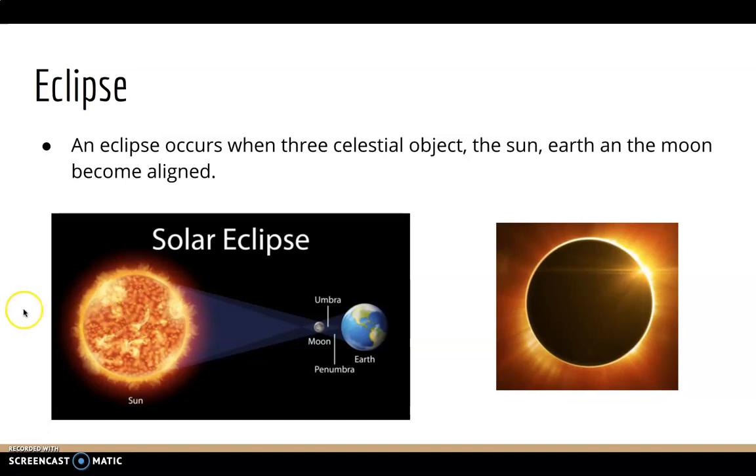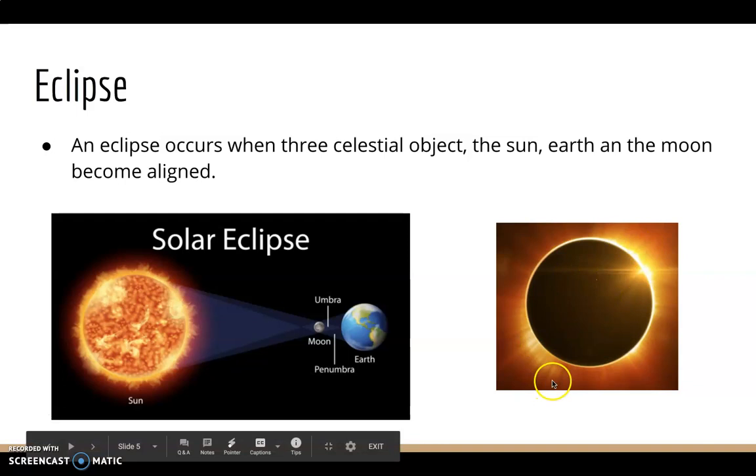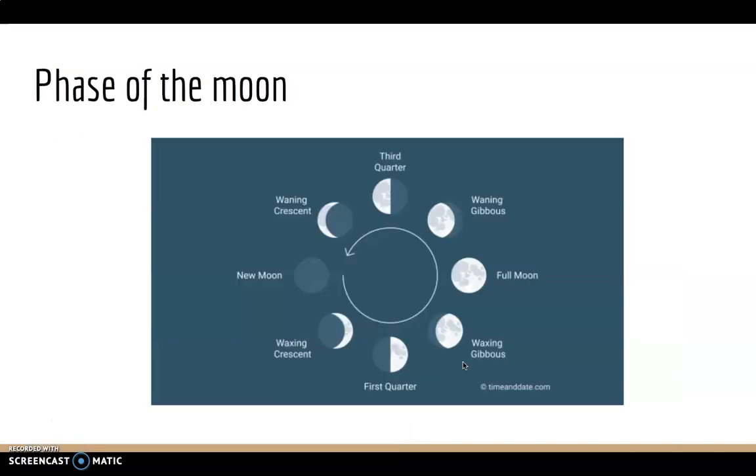As you can see here, they stay in one line and the Sun, the sunlight will shine through the Moon and shine through the Earth, which becomes like this, which is cool, right?